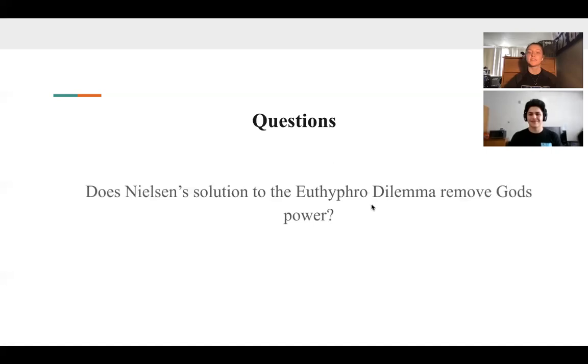All right, for this question. Go ahead. Does Nielsen's solution to the Euthyphro dilemma remove God's power? So for this line as Rais said, because God believes in the external standard, that means that he is not really like all powerful and all-knowing because he puts his beliefs and his power into the external standard.